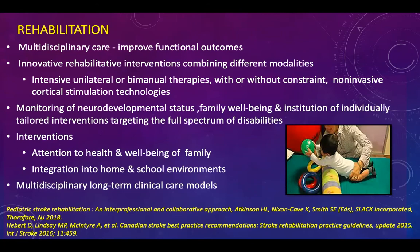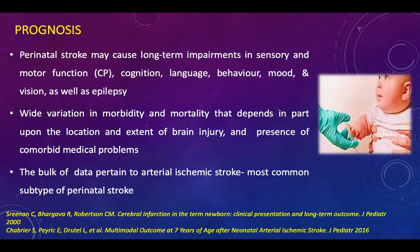Management should include monitoring of neurodevelopmental status, family well-being, and institution of individually tailored interventions. Interventions should include attention to the health and well-being of the family and integration into home and school environments. Prognosis depends upon the type of bleed, the underlying cause, the extent of the bleed, and the timeliness and success of treatment. Stroke may cause long-term impairments in sensory or motor function, cognition, language, behavior, mood, vision, and can cause epilepsy as well.